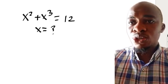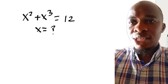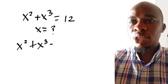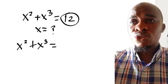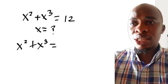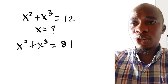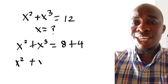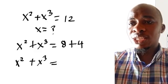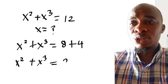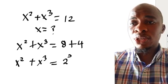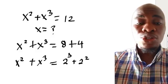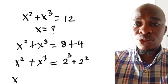What we are going to do here is rewrite x squared plus x to the power of 3 equals 12. The 12 here will be written as 8 plus 4. So we're going to have x squared plus x to the power of 3 equals 2 to the power of 3 plus 2 to the power of 2.